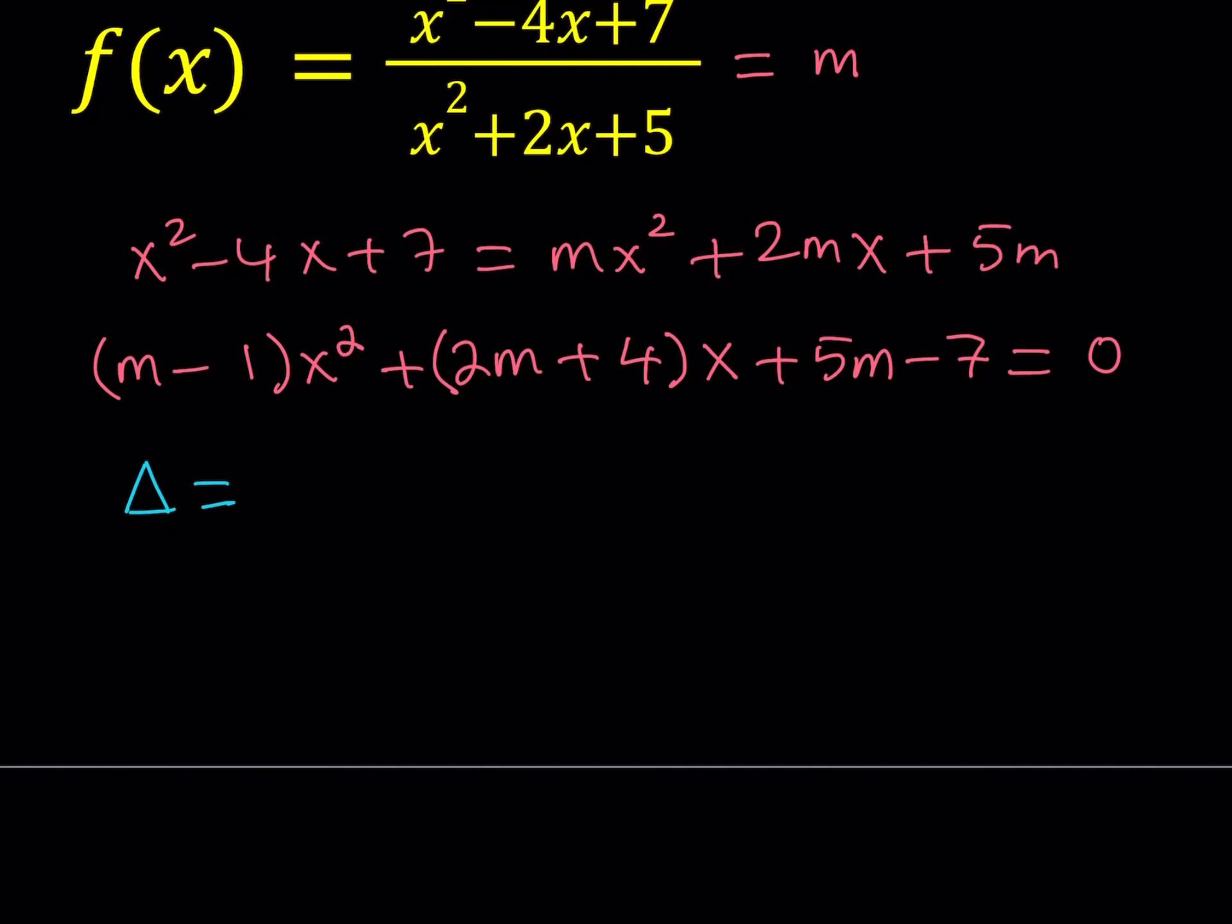The discriminant of this quadratic equation is going to be b squared. Discriminant is delta. I'm using the correct letter here. So b squared minus 4ac. c is the constant. Now let's go ahead and calculate this delta. Let's simplify as much as possible.